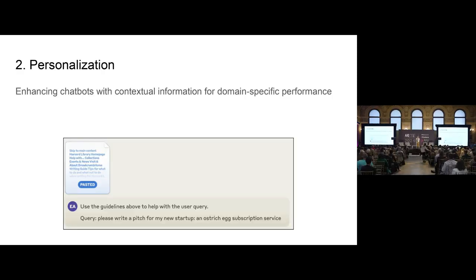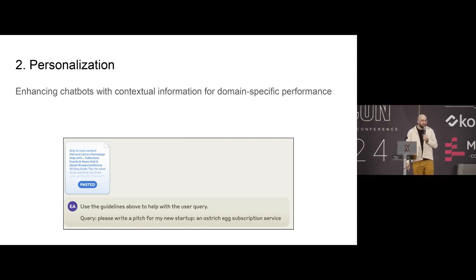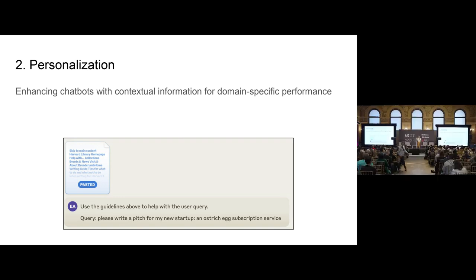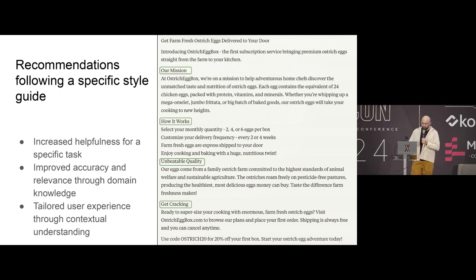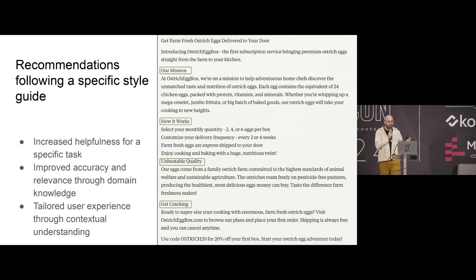Enhancing chatbots with contextual information. In this example, I asked the exact same question, but I pasted the Harvard Library style guide, which has guides about general writing but also apparently entrepreneurship. And here's what it gives us — a way more formatted output on the right where it's like: our mission, how it works, this is unbeatable quality, and of course a call to action at the bottom. So if you add context, you can get increased helpfulness for a specific task, improved accuracy in a given domain, and you can tailor your user experience.